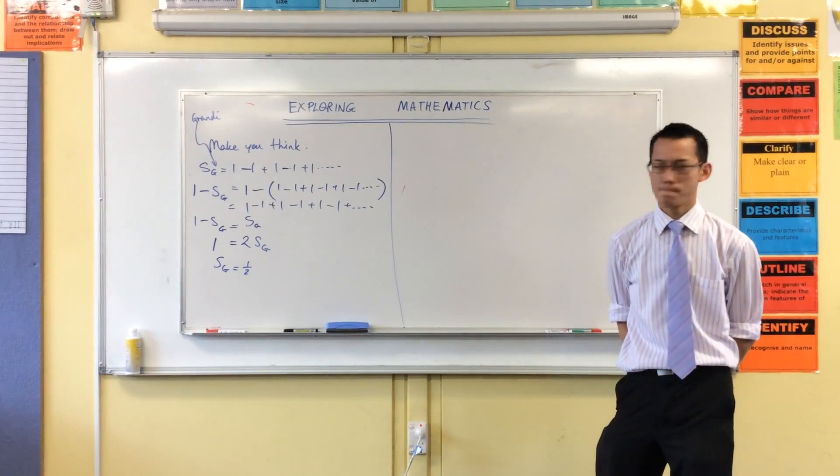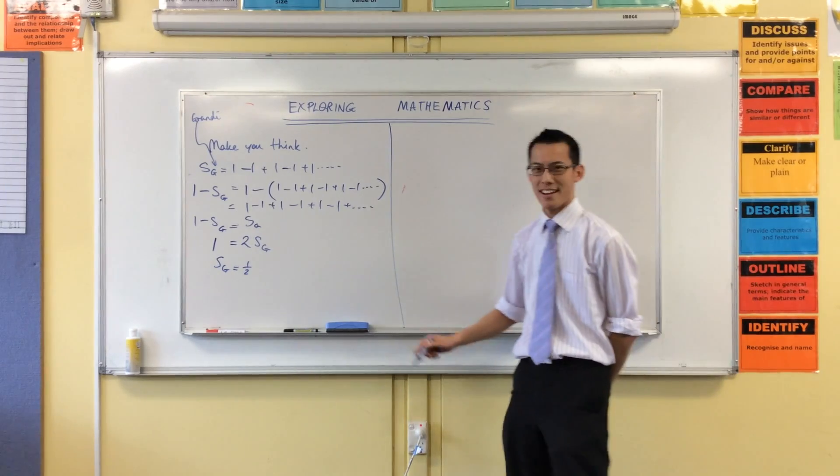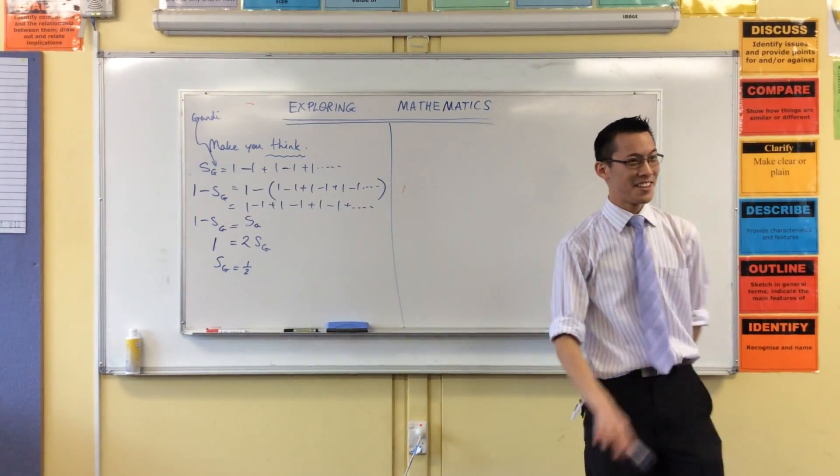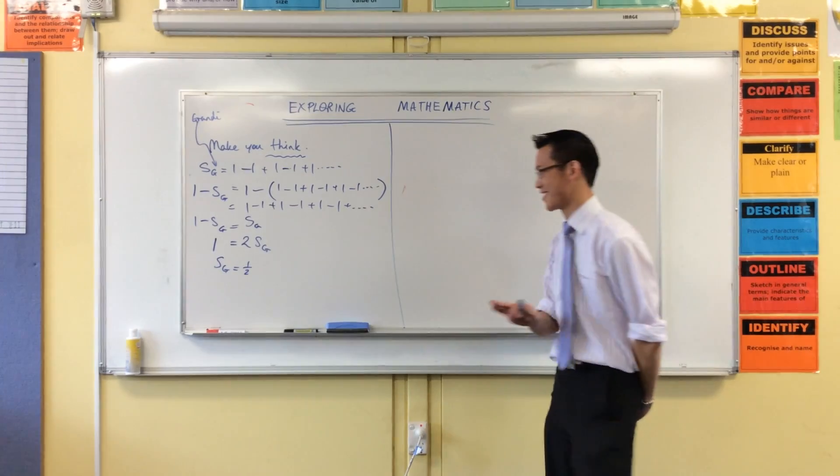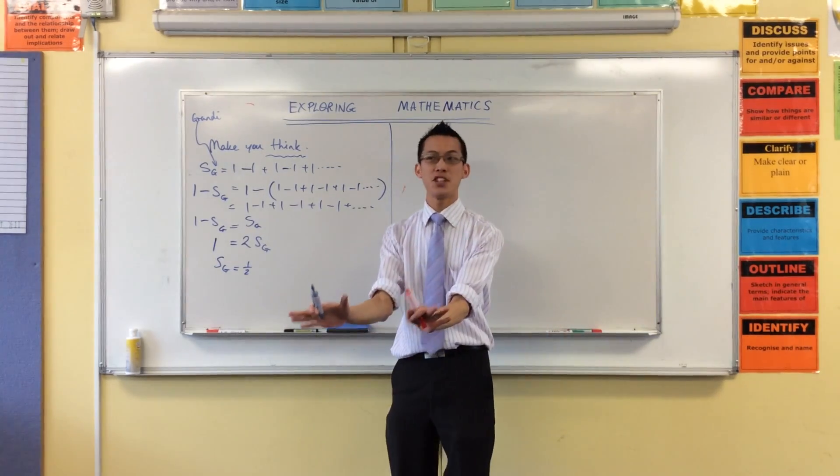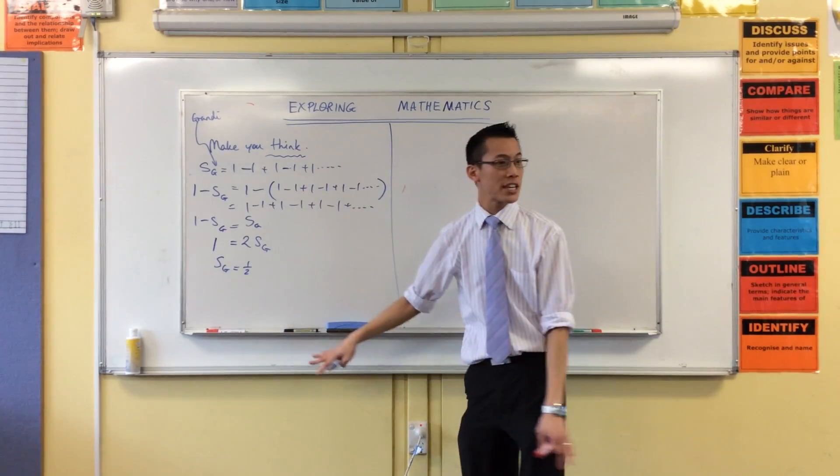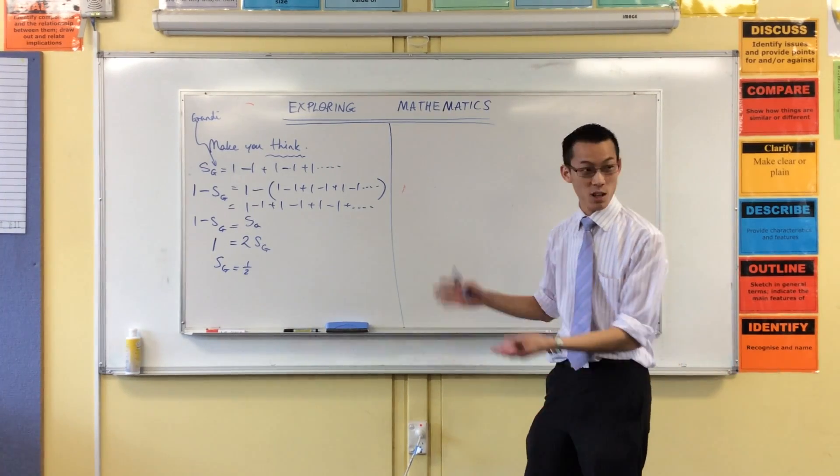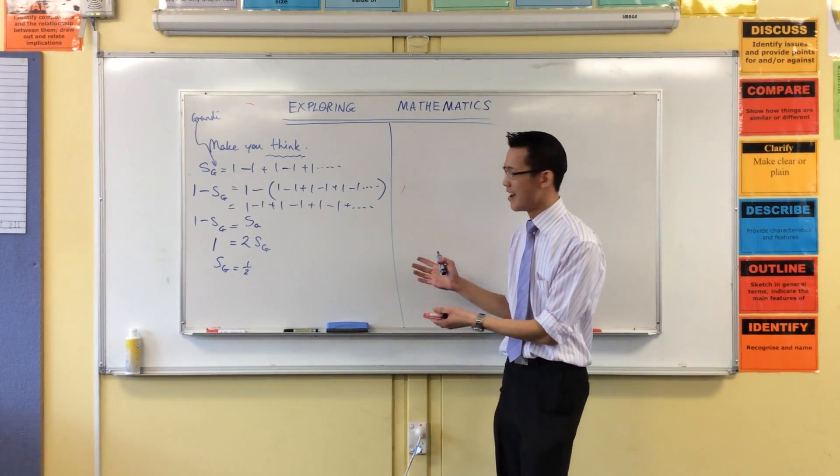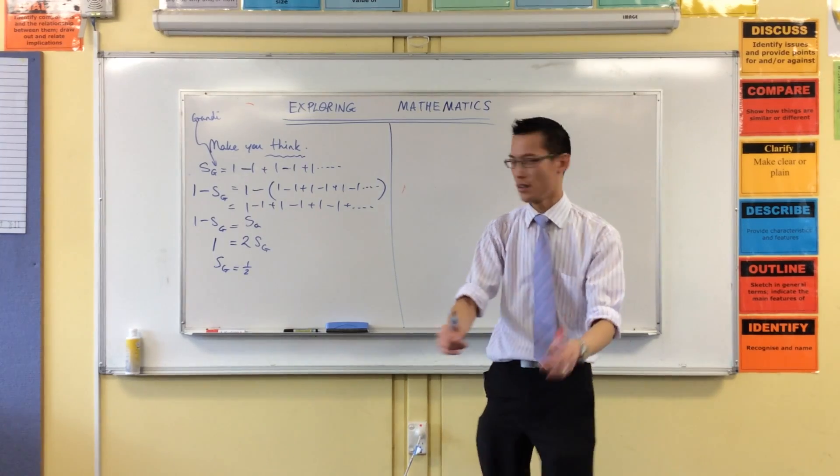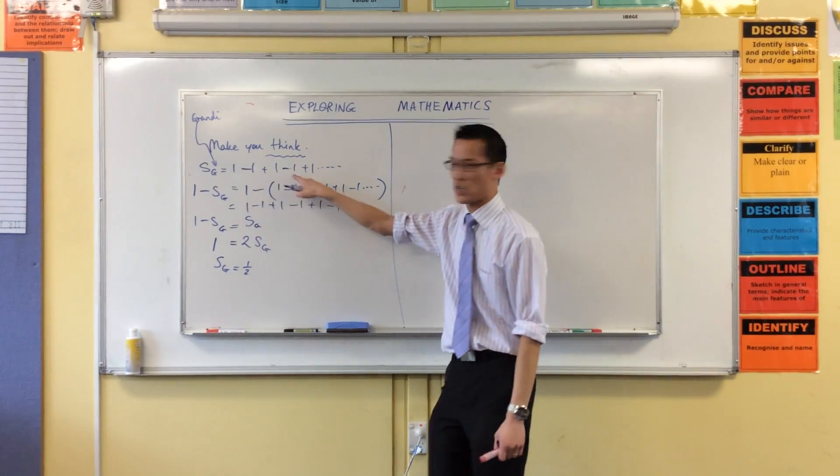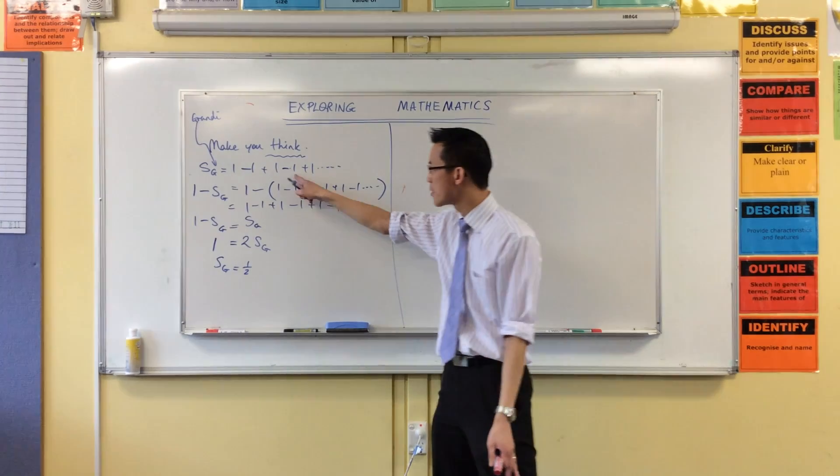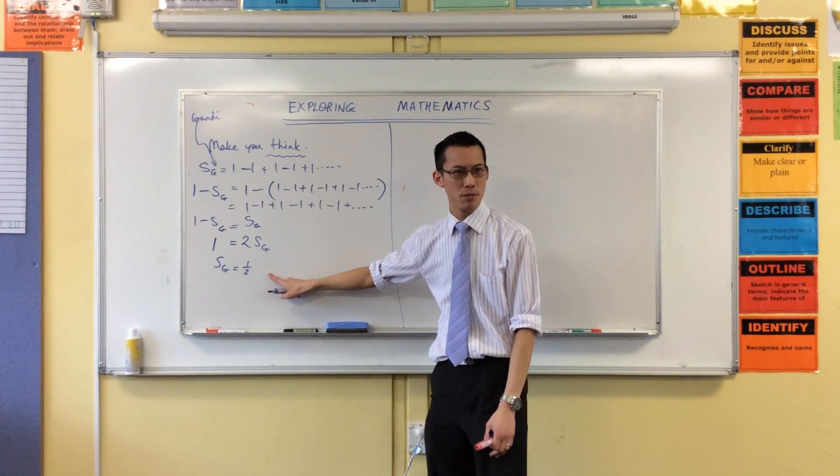All right, now whether you accept it or not, the logic is there and you can disagree with the logic if you like, but the logic is there nonetheless. It does seem strange that when you look at all these numbers which are all whole - admittedly some are negative but they're all whole - you add them up and somehow a fraction pops out the other end.